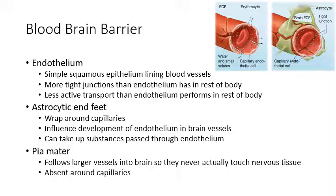Finally, you have the pia mater — every larger vessel that's not a capillary is going to be in a space surrounded by pia mater, so that the vessel is never directly exposed to nervous tissue. Those three factors make up the blood-brain barrier, but it's mostly based on tight junctions between the endothelial cells lining the capillaries in the brain.